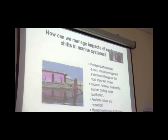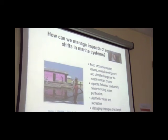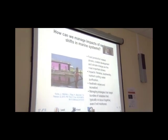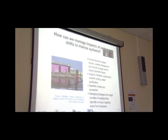We can also ask how we manage the impacts of regime shifts, and for that we wrote a paper with emphasis on marine systems. For marine systems, we found that food production-related drivers, coastal development, and climate were the most important drivers. The impacts on food provision were related with the collapse of fisheries, or lower production of food in terms of marine production, but also lower capacity to maintain diversity and processes such as nutrient cycling and purification. We found that aesthetic values and recreation were ecosystem services that were strongly affected in these areas.